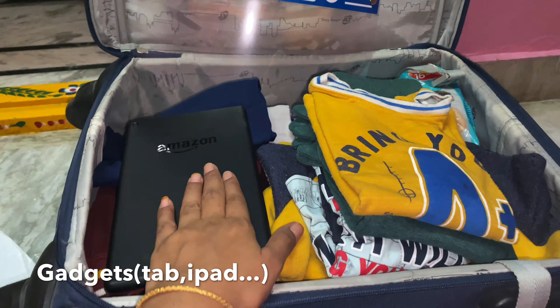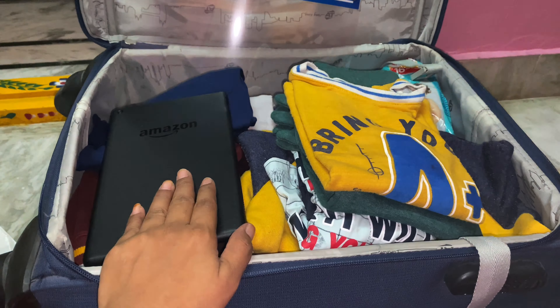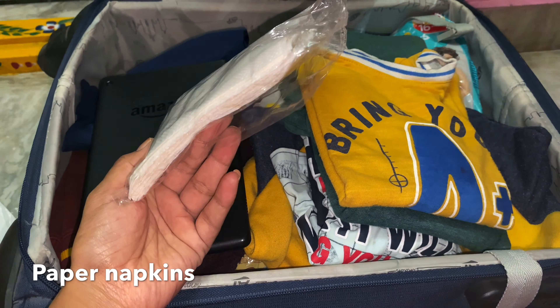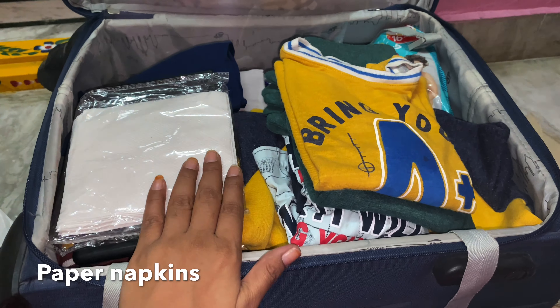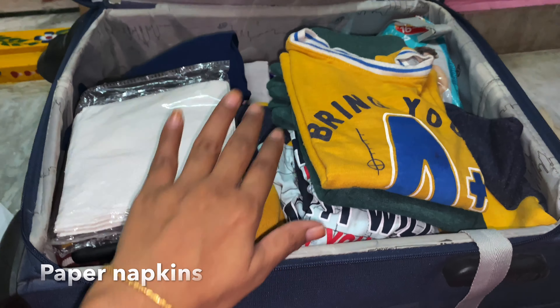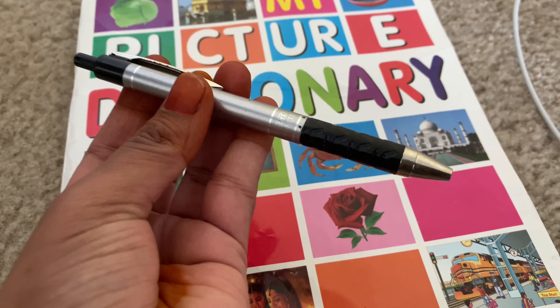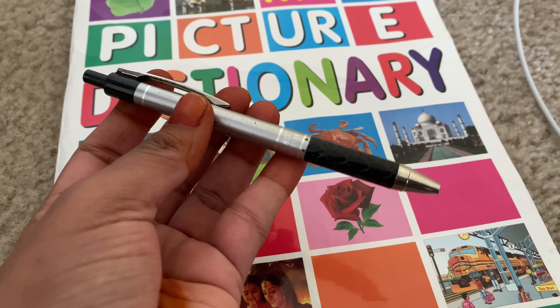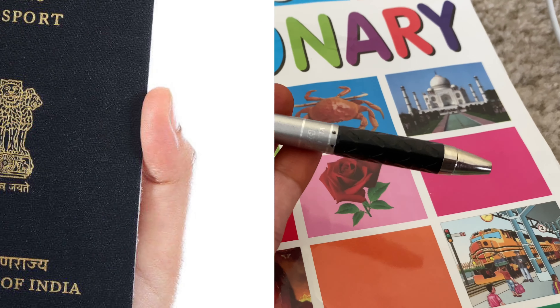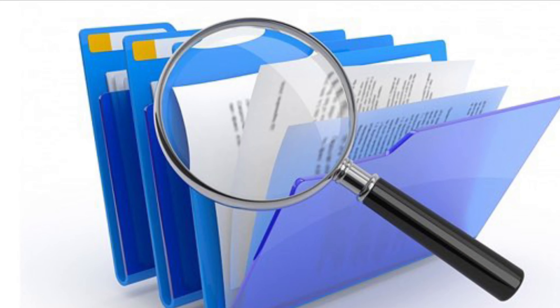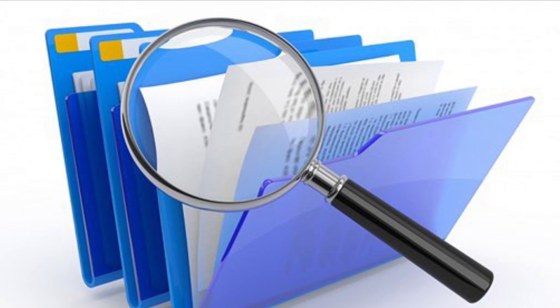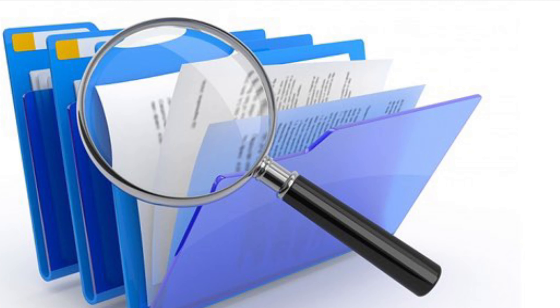You have an iPad, Tab, and toys. Next, some napkins. You have a pen — if you have any forms at the airport, such as custom forms and declaration forms, you must carry a pen. The main thing is your passports and your ticket printouts. Documents like kids' birth certificates are the main documents you need.